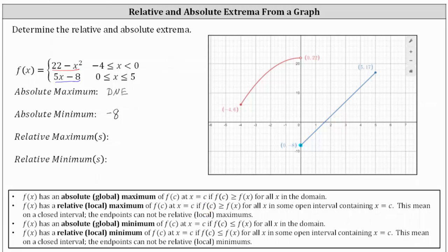Looking at the graph, the endpoint 5 comma 17 is a high point on the graph of the function. However, we cannot approach this point from the right because it's an endpoint, and therefore it does not meet the definition for a relative maximum. The function does not have any relative maximums, and therefore we enter DNE.